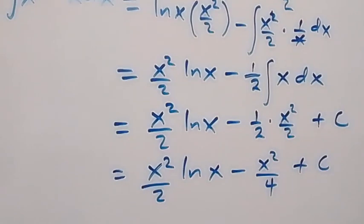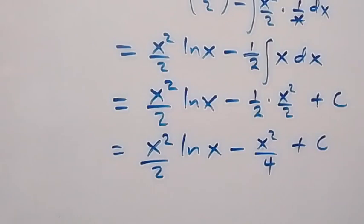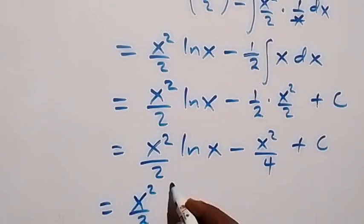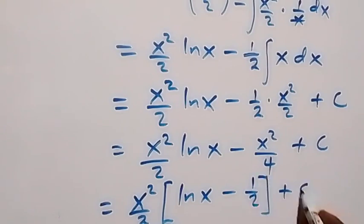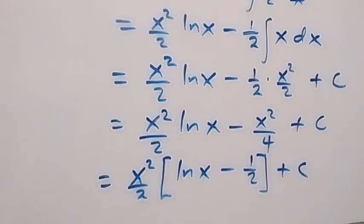So here we can factor x squared over 2 out such that this will become x squared over 2 into bracket. Here we have ln x left, then minus here we will be left with 1 over 2, then plus C. So here we have the integral to this given problem.